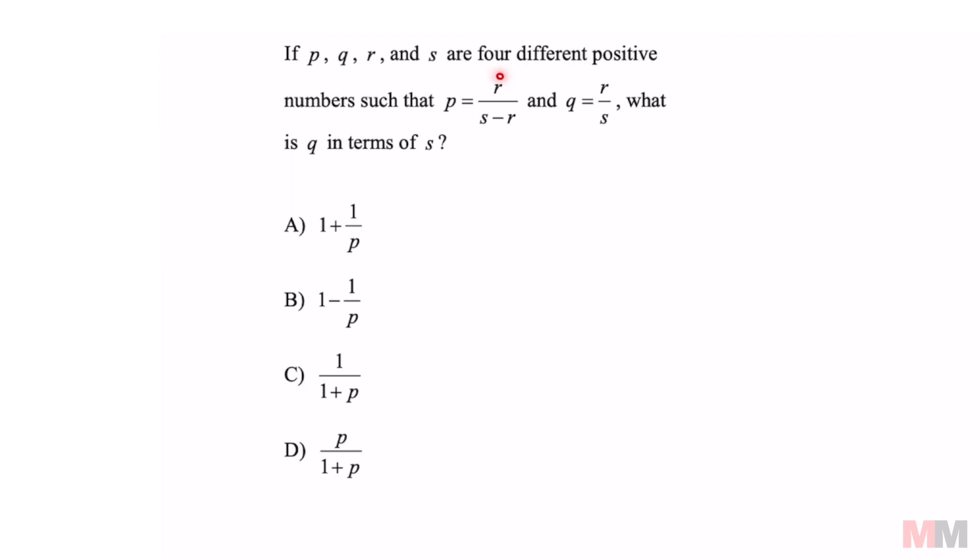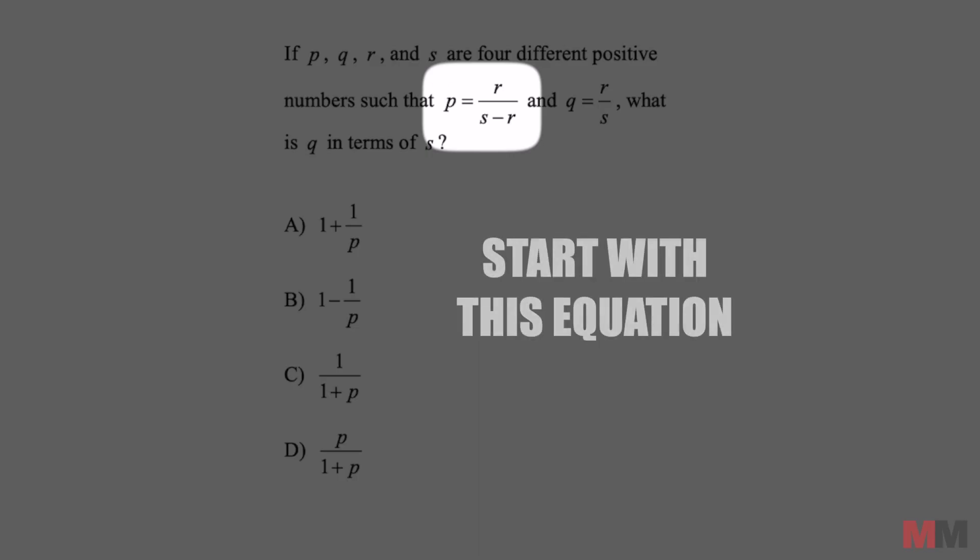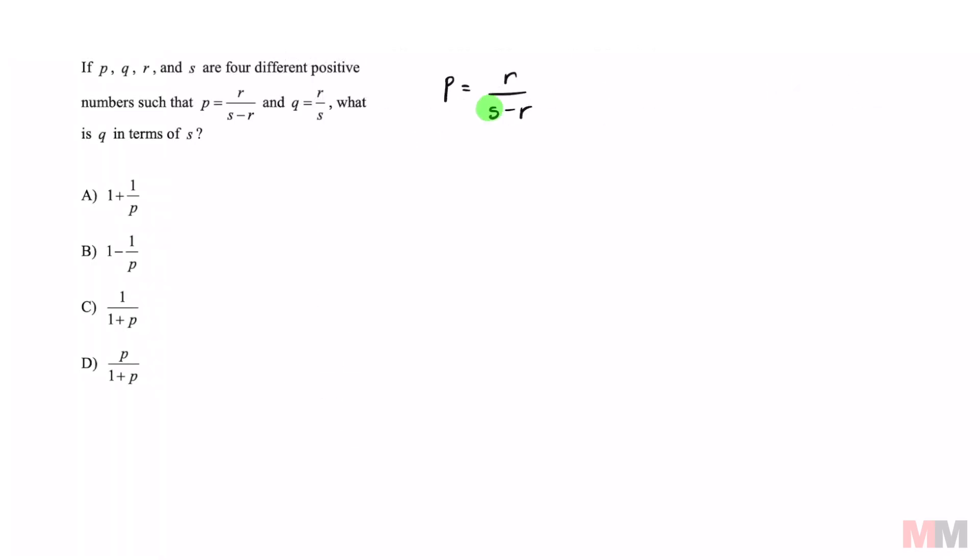Anyways, we have to figure out how to merge these two equations together. And if you look at the second equation, Q is already solved. All your answer choices have P on there. So we are going to take this equation and it actually doesn't matter if you solve for R or S. So let's go ahead and do that. I'm just going to target S just because there's one variable of S on there. And then once we get S, we're going to substitute it right here.